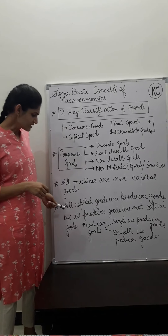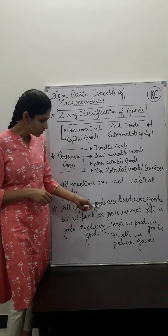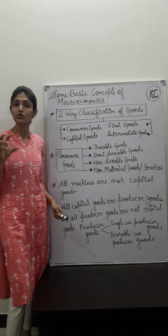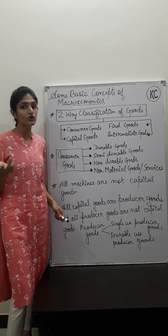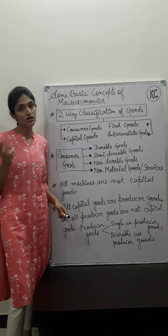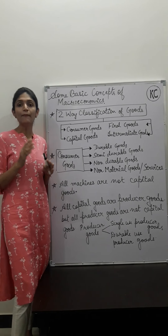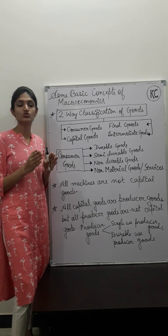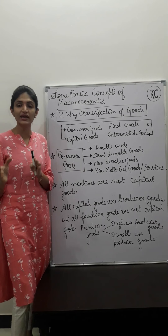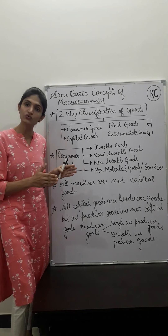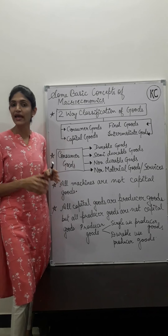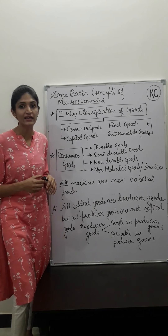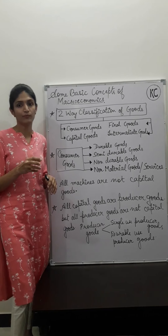The second statement: all capital goods are producer goods. This is true. Capital goods — which are long-run, bought by the producer, subject to depreciation, and have high economic value — are used by the producer. So all capital goods are indeed producer goods.